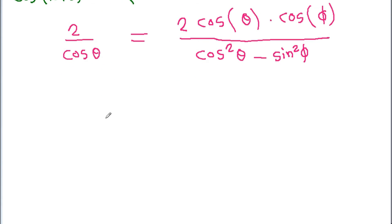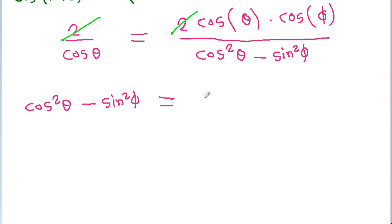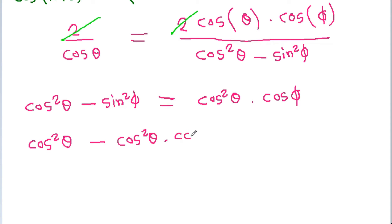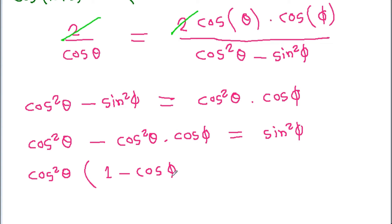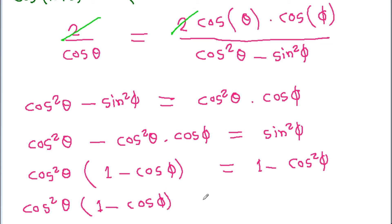We can cancel the 2 and cross multiply to get cos²theta - sin²phi equal to cos theta times cos theta·cos phi, which is cos²theta·cos phi. Rearranging: cos²theta - cos²theta·cos phi equals sin²phi. Taking cos²theta common: cos²theta·(1 - cos phi) equals sin²phi, which is 1 - cos²phi.